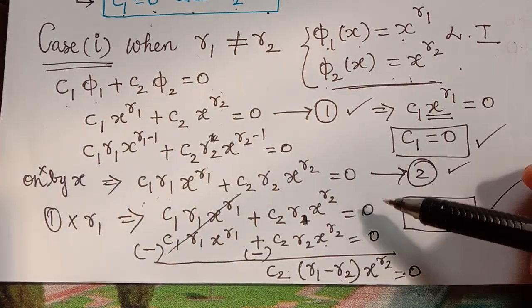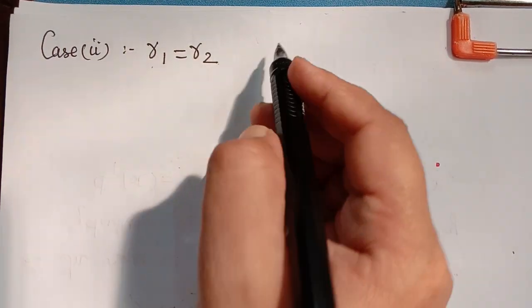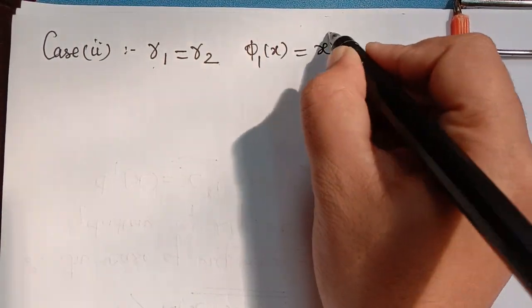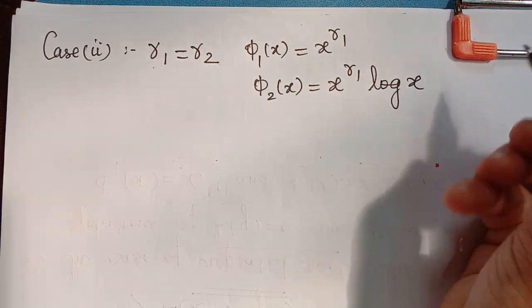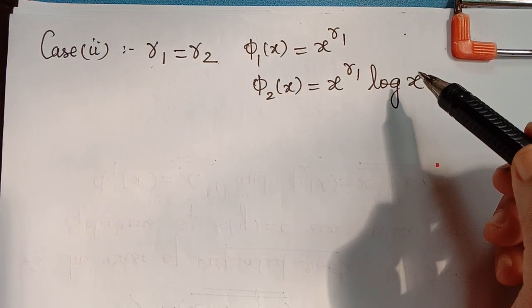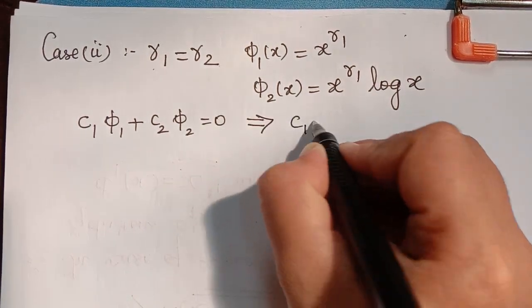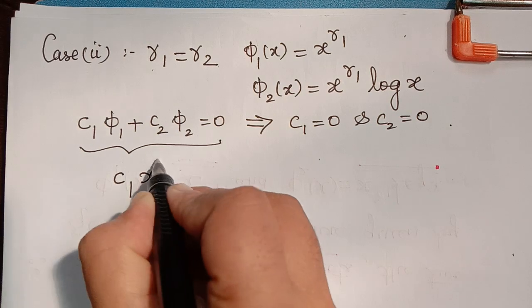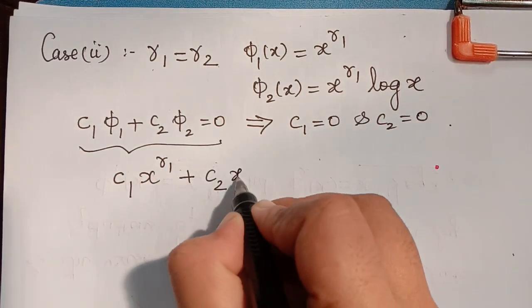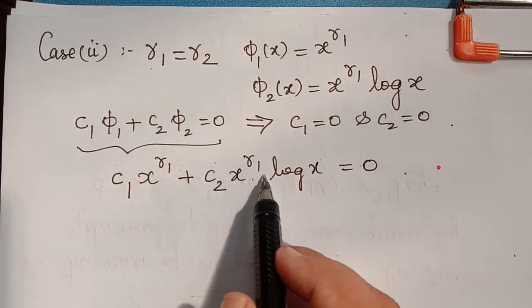Case 2: r₁ = r₂, that is, both roots are equal. In this case φ₁(x) = x^r₁ and φ₂(x) = x^r₁ · log x. We have to show these two solutions are linearly independent, so we consider c₁φ₁ + c₂φ₂ = 0, which gives c₁x^r₁ + c₂x^r₁ log x = 0. We can see that x^r₁ is common to both terms.